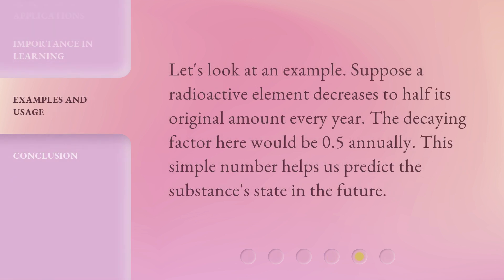Let's look at an example. Suppose a radioactive element decreases to half its original amount every year. The decaying factor here would be 0.5 annually. This simple number helps us predict the substance's state in the future.